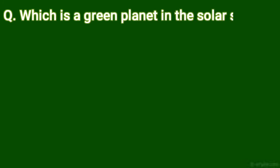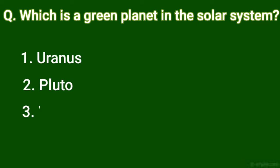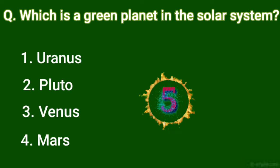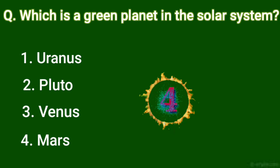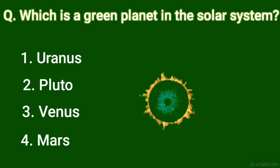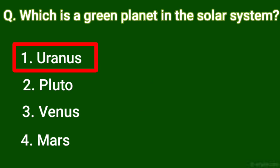Which is a green planet in the solar system? Answer is 1.